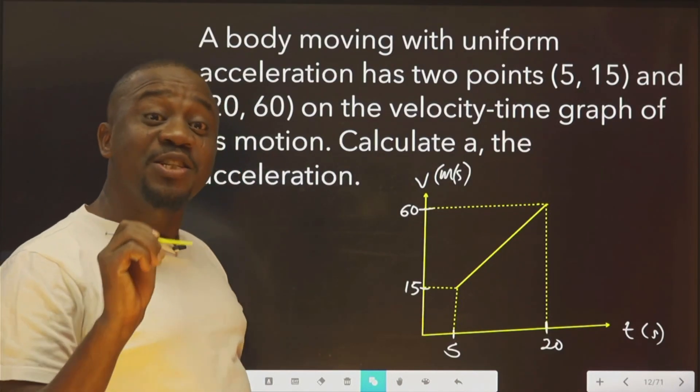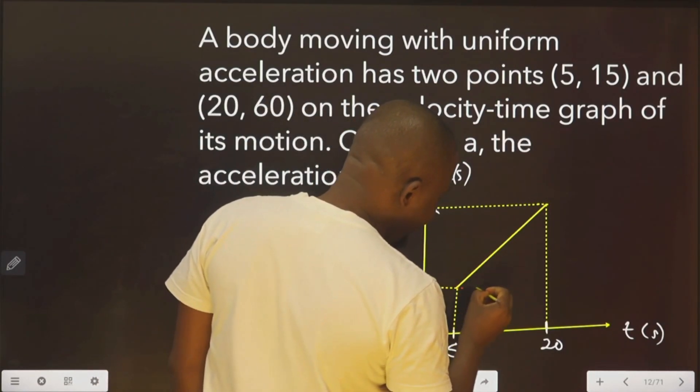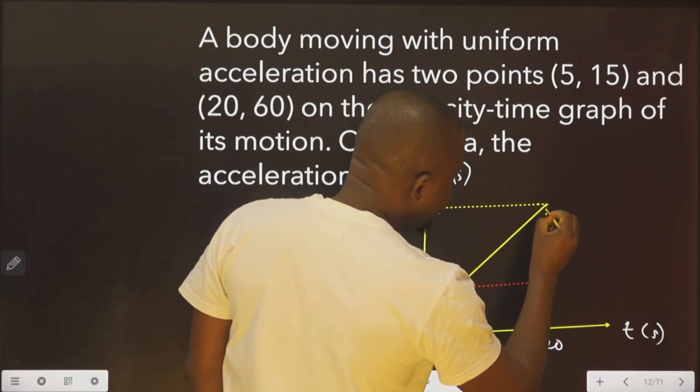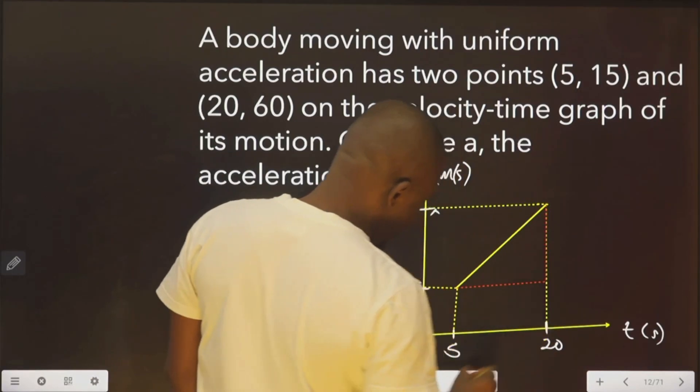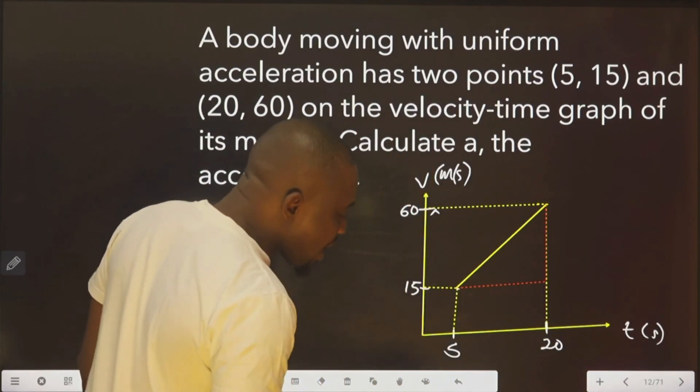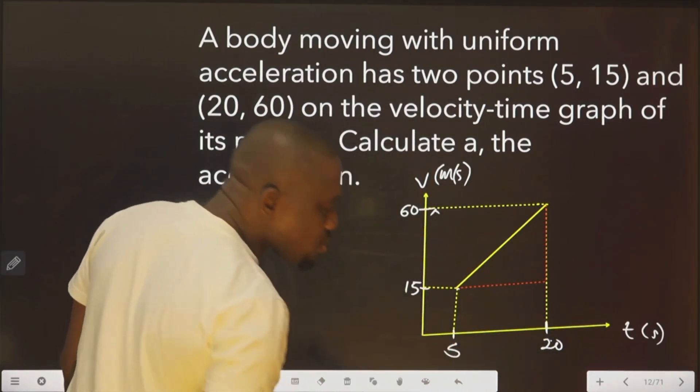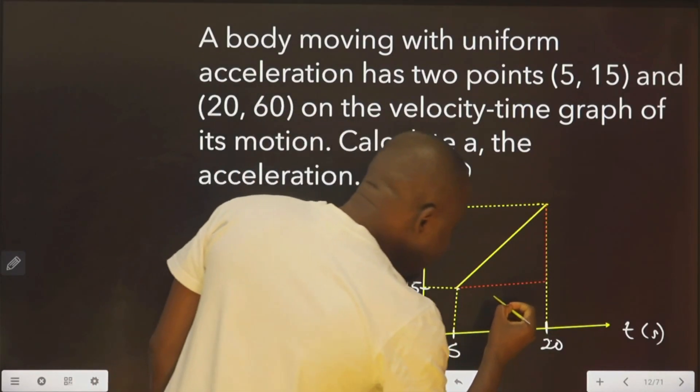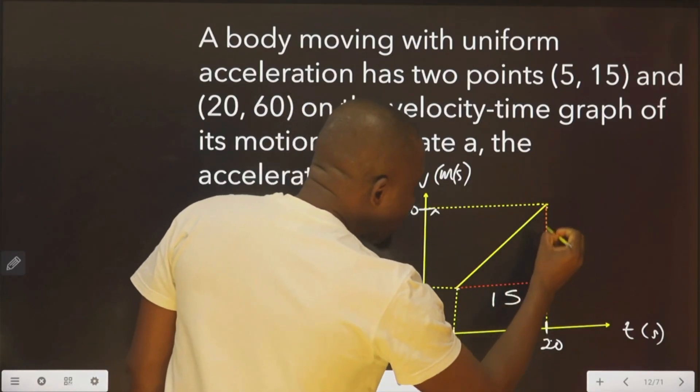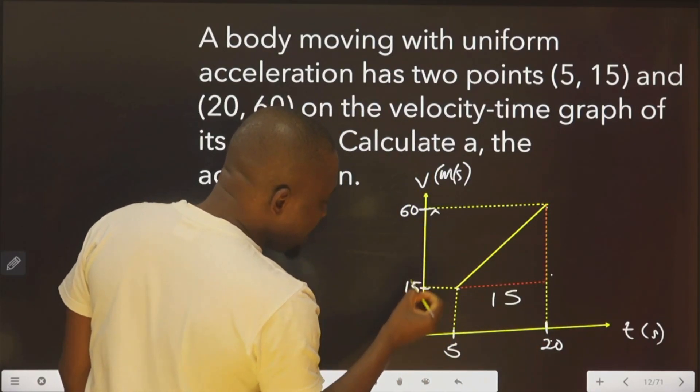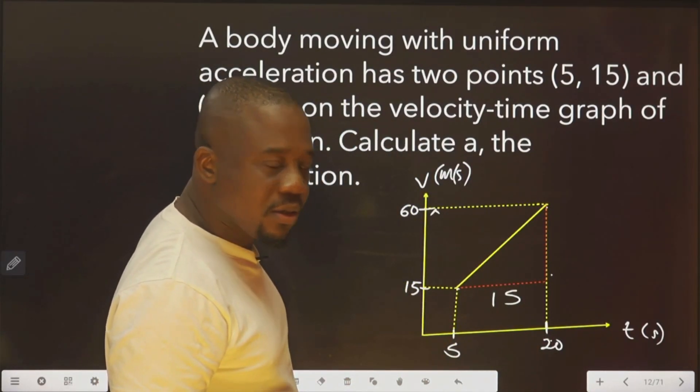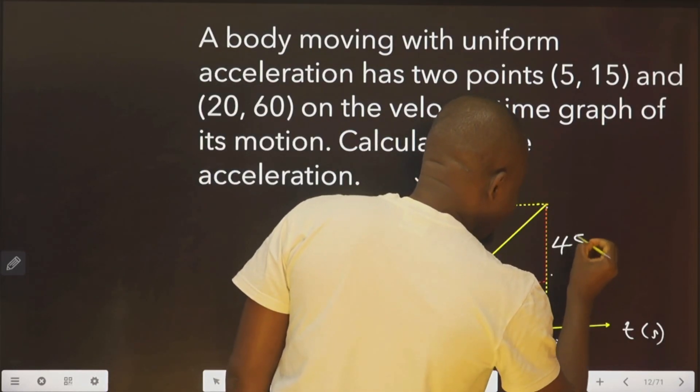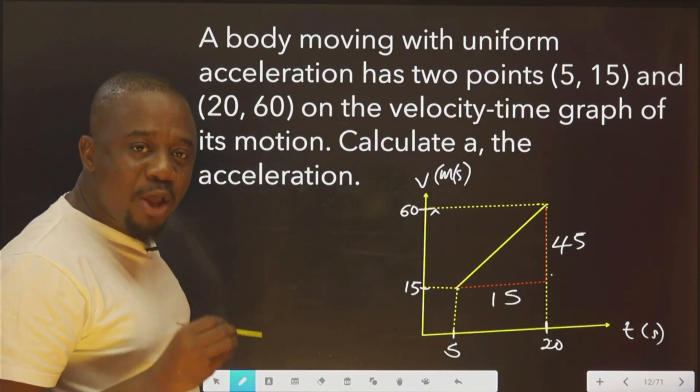Let's take a rough line again. From here, this is from here to here. From here to here, you agree with me, it's 20 minus 5, which will give us 15. So, this is 15. Here to here, that is 60 minus 15, which is 45. And you agree with me?